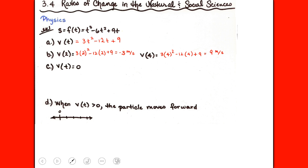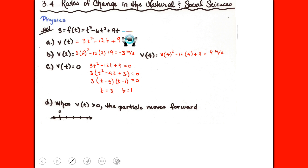Next they ask: when is the particle at rest? If the particle is at rest, its velocity is zero. So we take the velocity equation v(t) = 3t² − 12t + 9, set it equal to zero, and solve for t — that tells us when the particle is at rest.